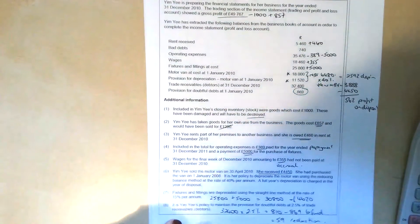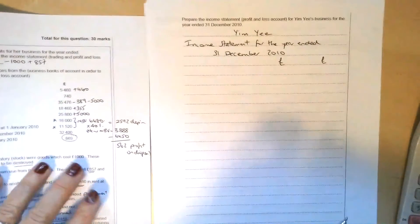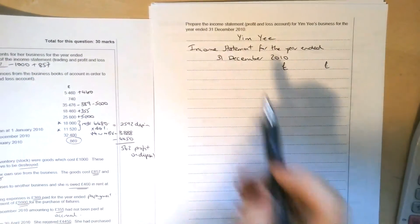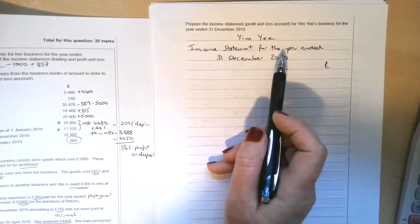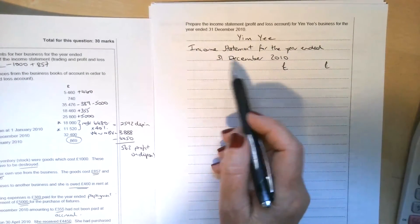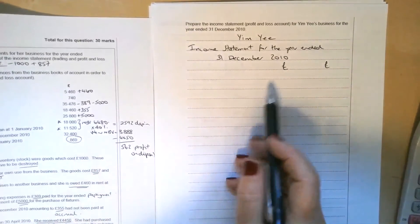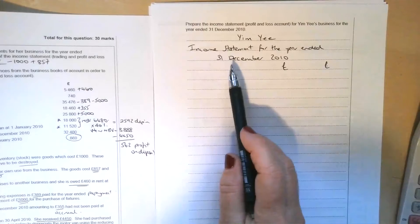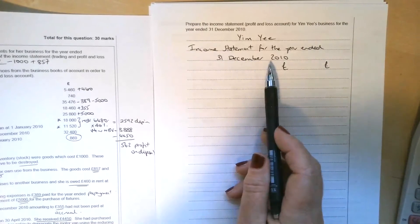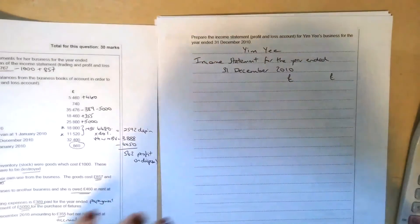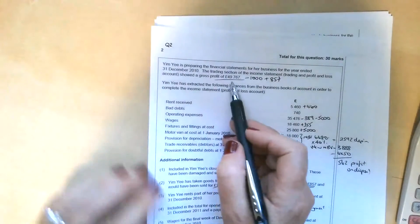If we put all of that together, I've already made a start on this. So don't forget, whenever you need to do any sort of financial statements, the examiner expects you to write what it is. So this is the income statement for Yim Yi for the year ended 31st of December 2010. Obviously, if it's a statement of financial position, it will be as that. Don't go abbreviating this. Don't write 3, 1, 12, 10. You need to write the date out in full. That's the convention.